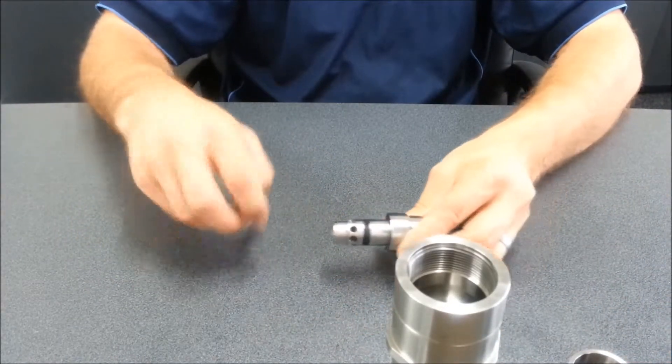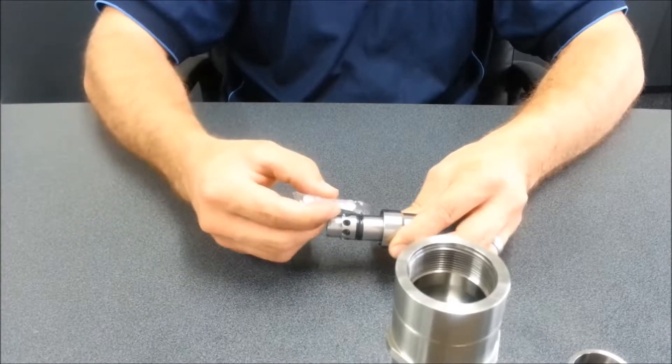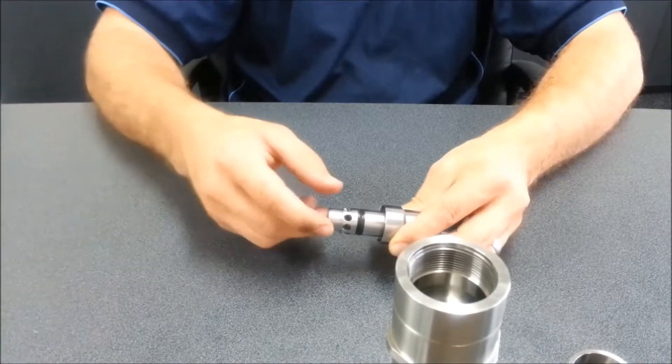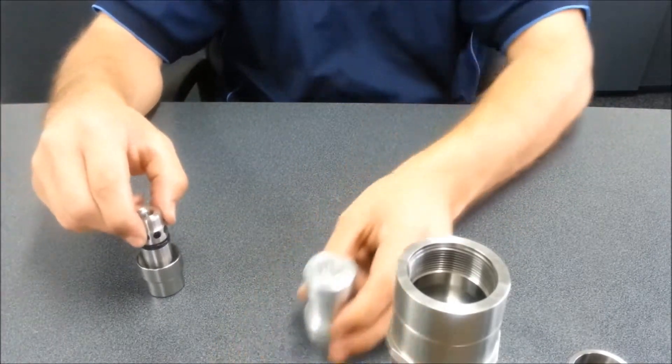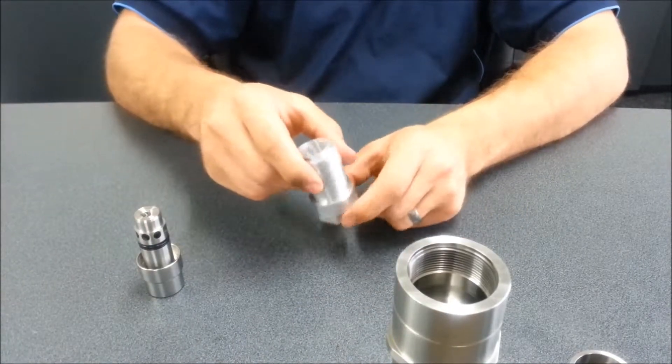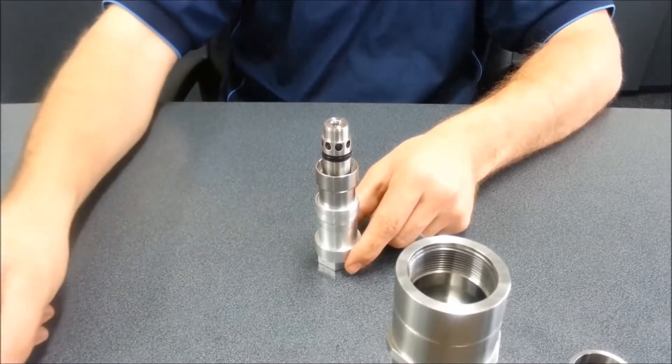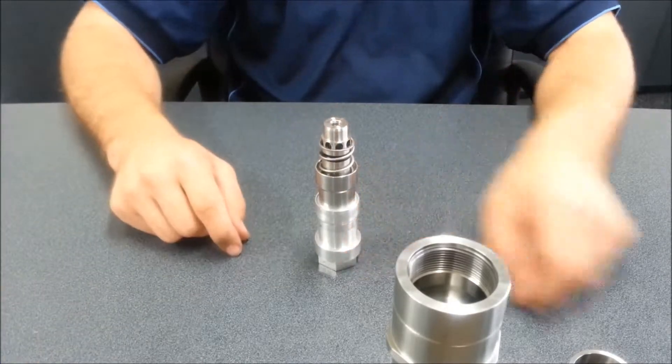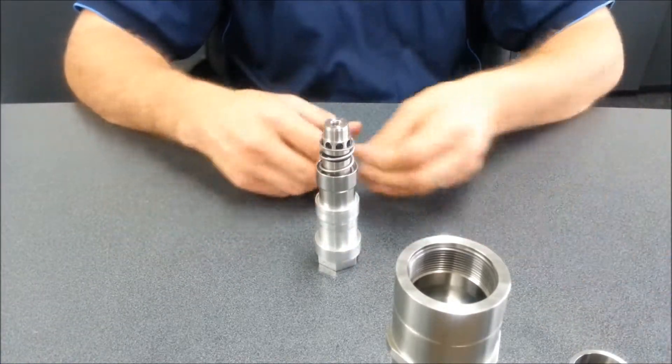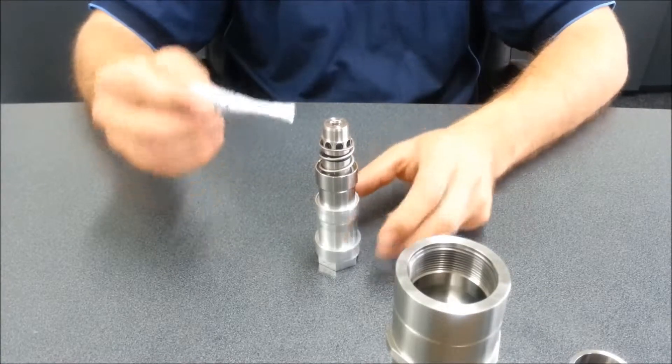Take the new poppet and apply silicone grease to the o-rings. Turn the assembly tool to the vise. Put the poppet on it, install the poppet spring, and apply loctite to the thread.